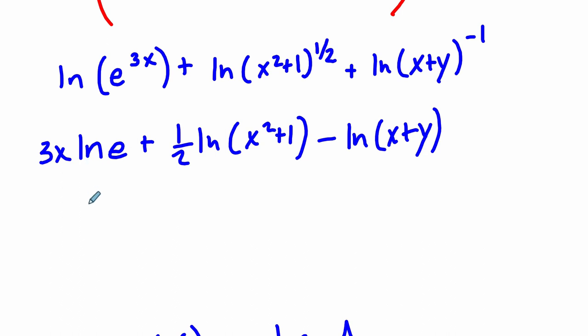At this step right here, I'm just going to rewrite it. So it says 3x plus 1 half times the natural log of x squared plus 1, minus the natural log of x plus y. And all I did right there was I said, okay, the natural log of e is just 1. And 3x times 1 is 3x.